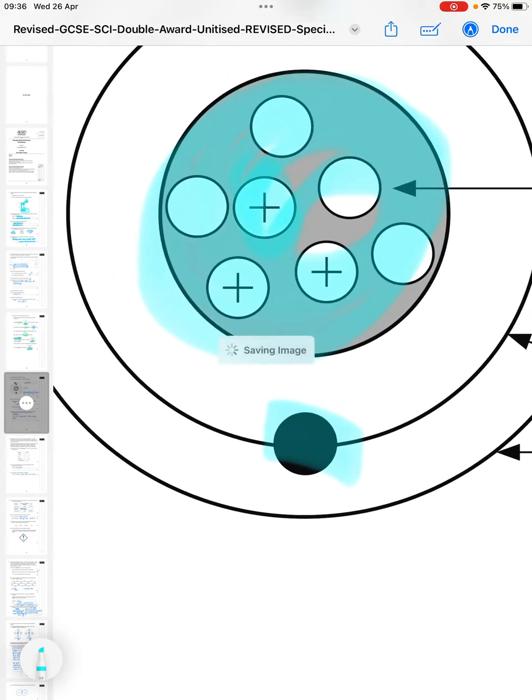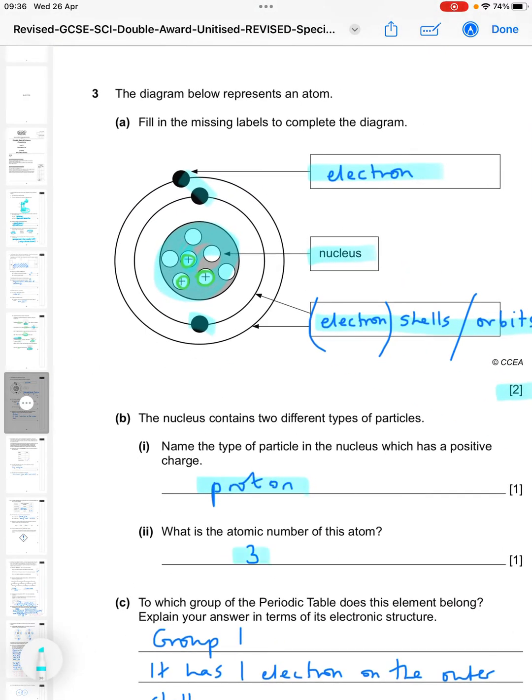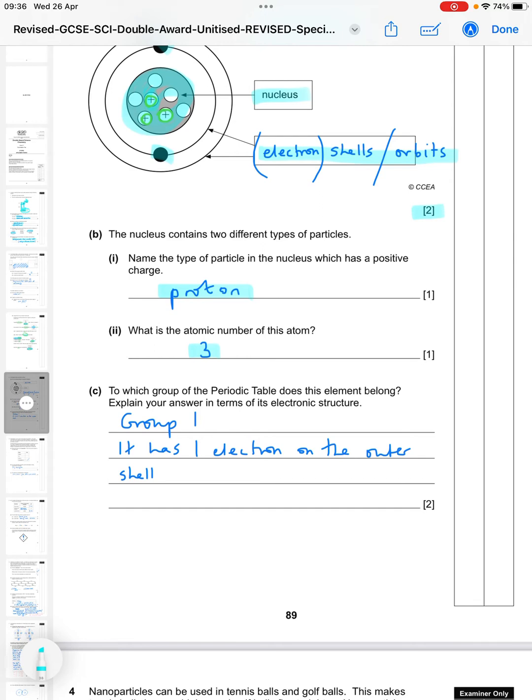The nucleus contains two different types of particles. Name the type of particle in the nucleus with a positive charge - so protons are positive, so it's a proton. What is the atomic number of this atom? So you look in here, there's three protons - one, two, three. So the atomic number is the same as the number of protons, so that is three.